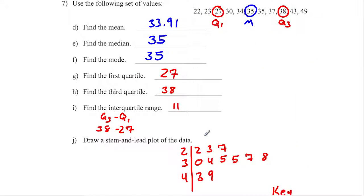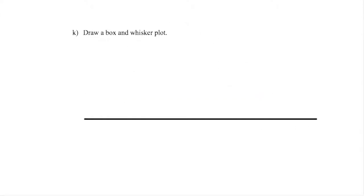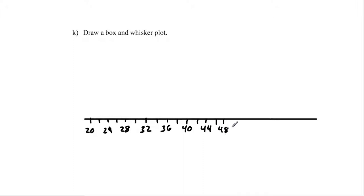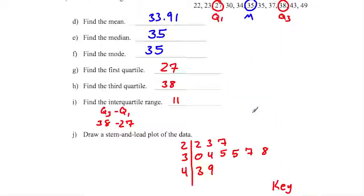To draw the box and whisker plot, I take these values and put them on a number line going from about 20 to 50. I can do values of 2 — so counting by 2 starting at 20: 22, 24, 26, 28, 30, 32, 34, 36, 38, 40, 42, 44, 46, 48, and 50. My largest value is 49, so I'm good.